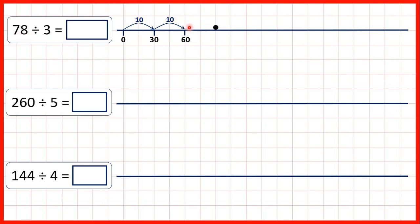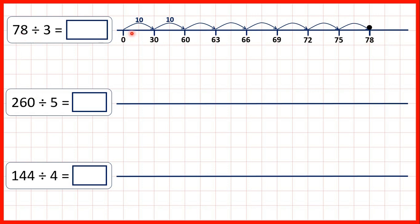Now we're getting closer to 78, so we just count on 3 each time: 63, 66, 69, 72, 75, and then we've got to 78. We count the number of jumps we made: 10, 20, 21, 22, 23, 24, 25, 26 jumps. So our answer is 26.